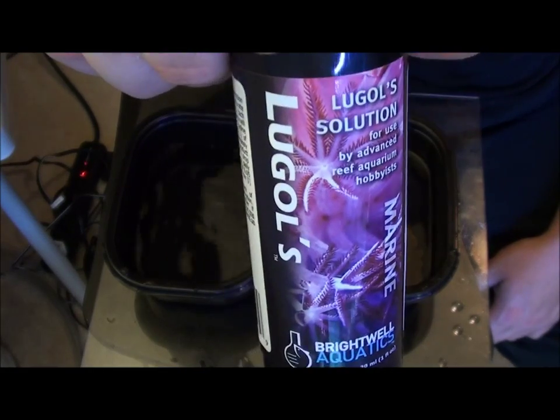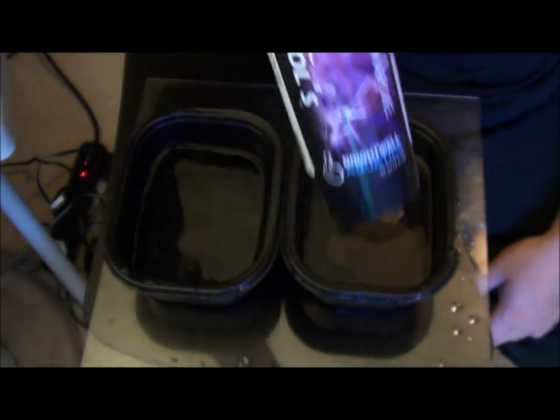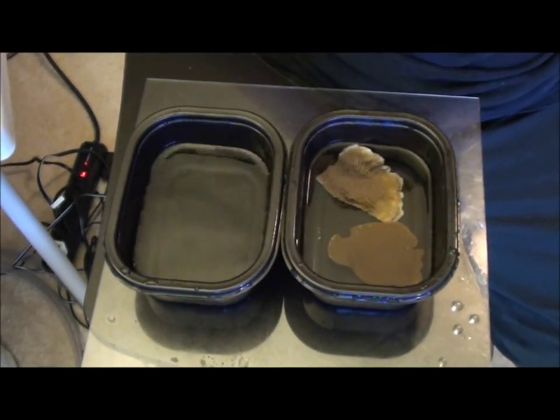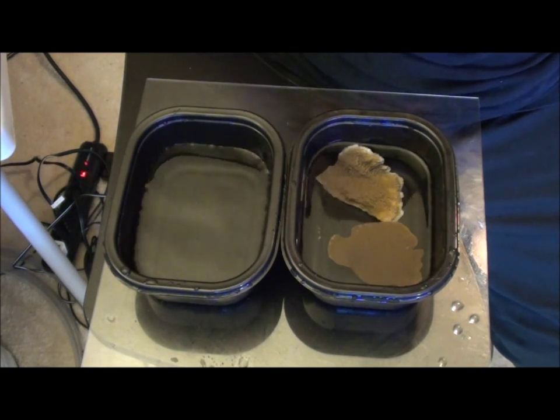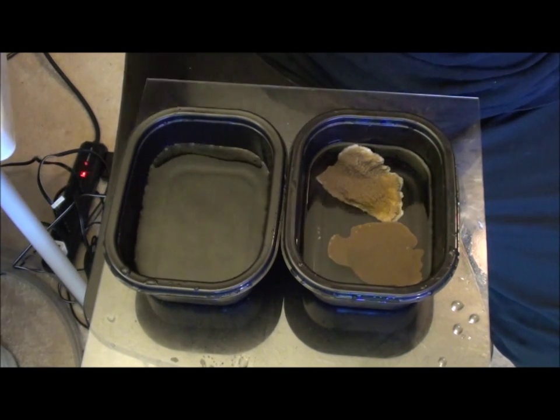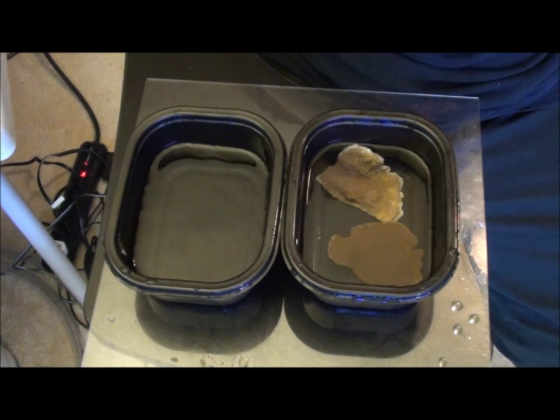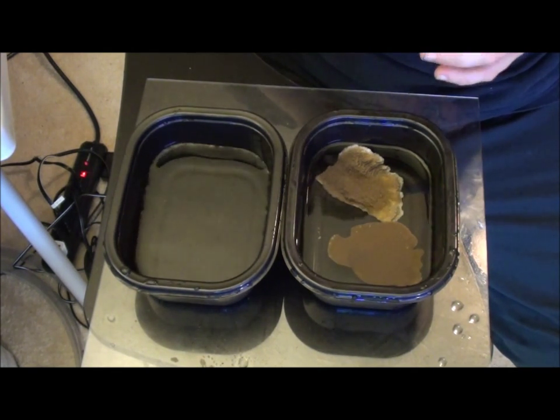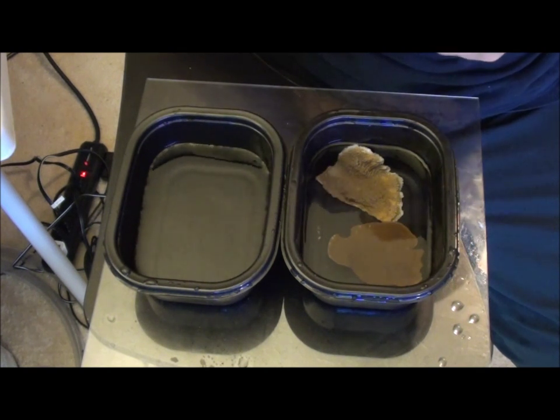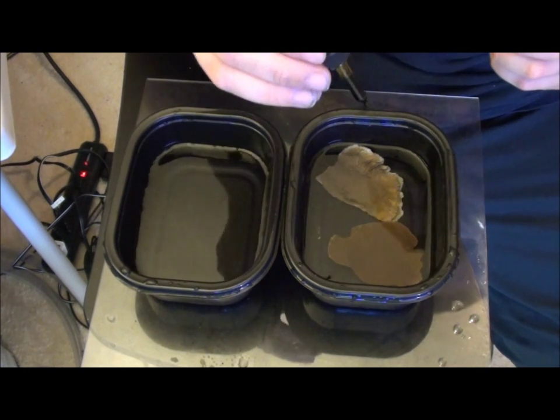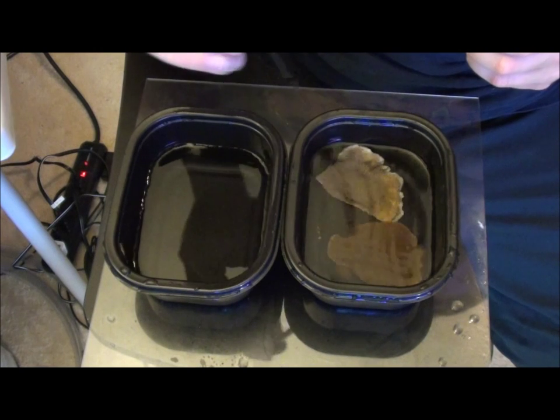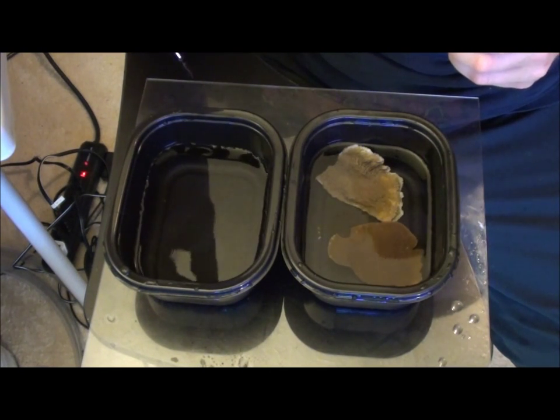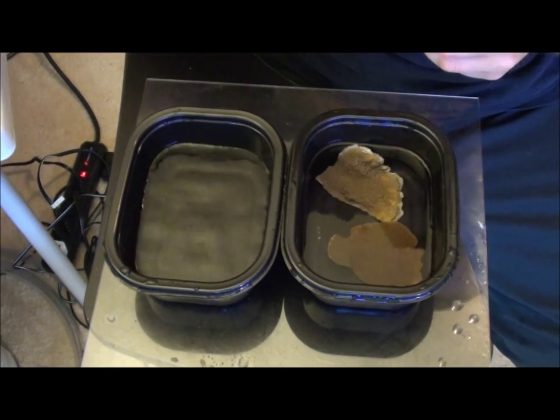Before I do that, I'm going to use a little bit of Lugol solution from Brightwell. It's basically just a concentrated iodine solution that's going to help the exposed parts of the corals I'm about to break, make them not as susceptible to any diseases. You want to go ahead and just put about a drop in each one. This is very concentrated, so you do not need much at all.